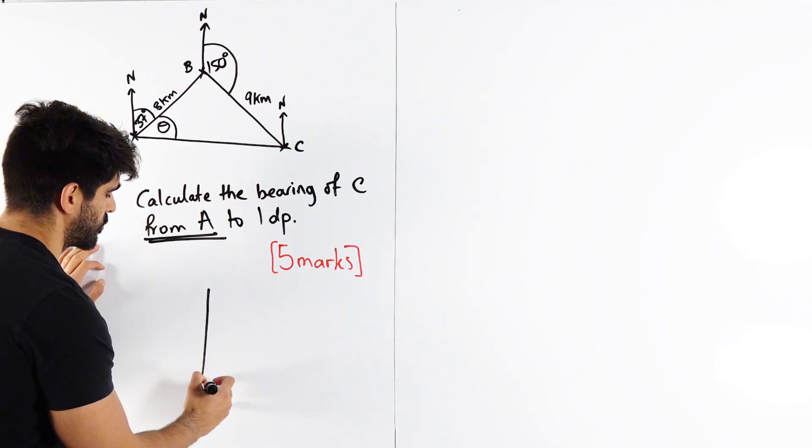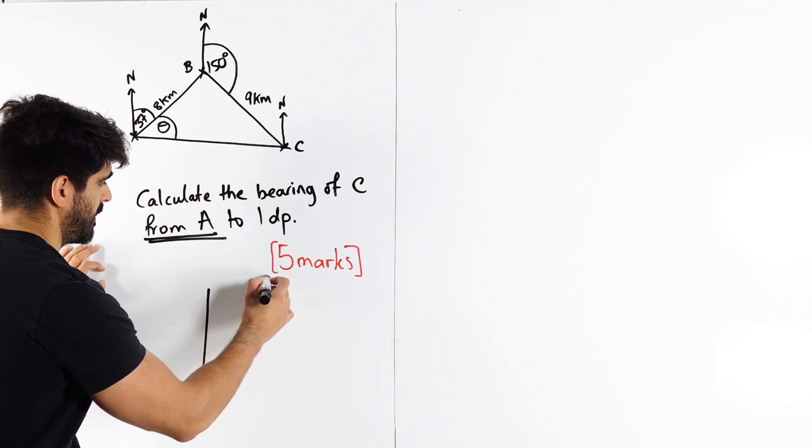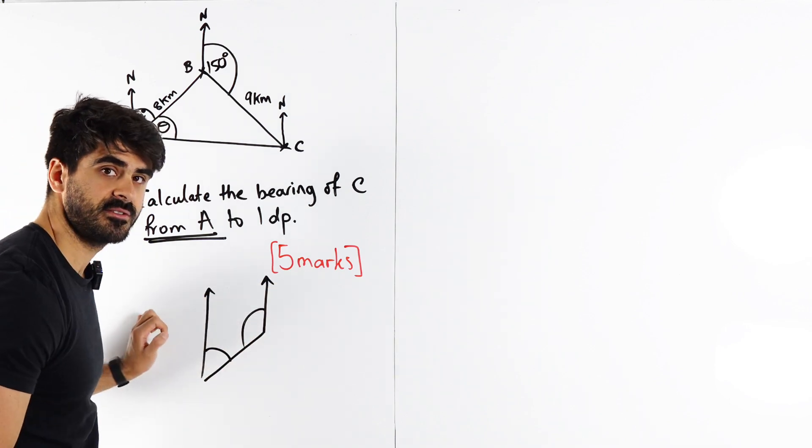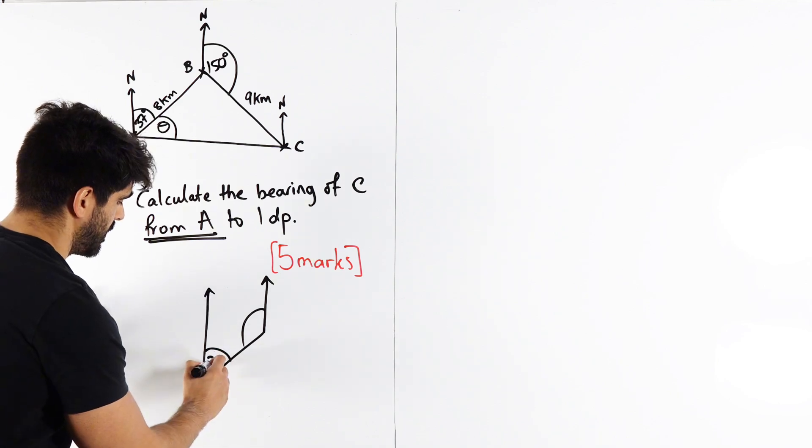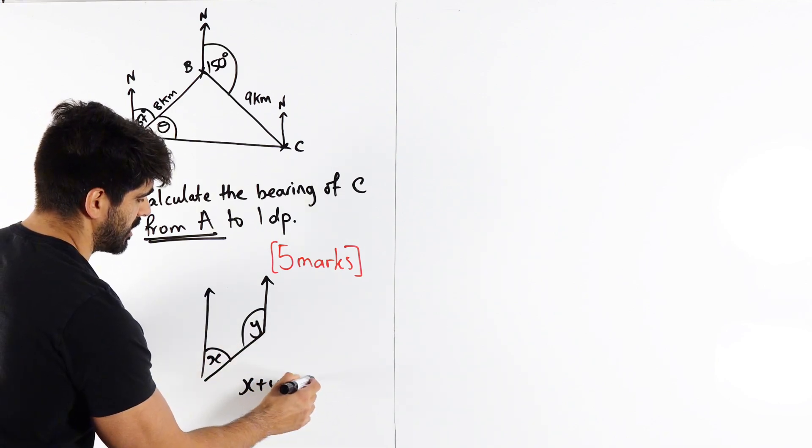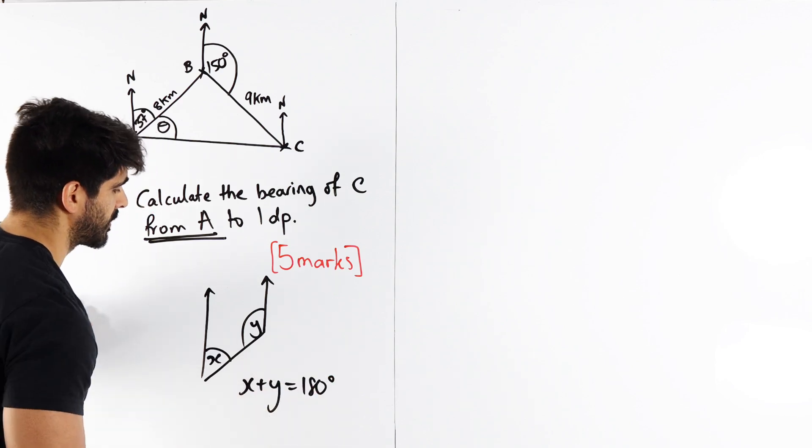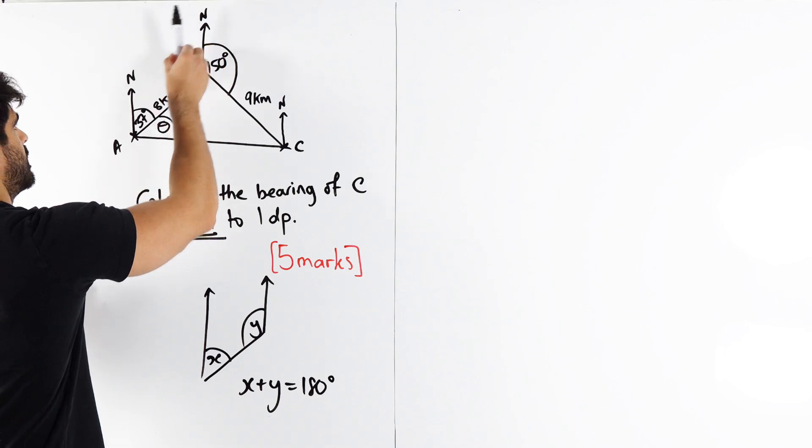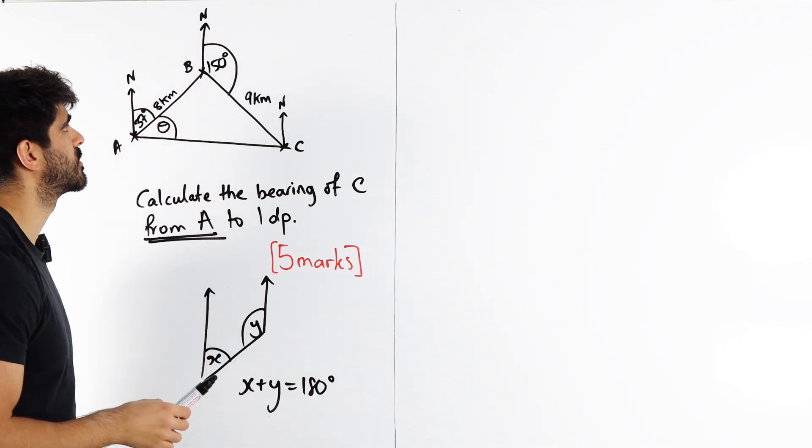And it's the co-interior angles rule. If you have two parallel lines, the interior angles here, what is it? They add to 180. So if this is X and this is Y, X plus Y is 180 degrees. How can we utilize this here? So I'm looking at the parallel lines and I'm looking for interior angles.